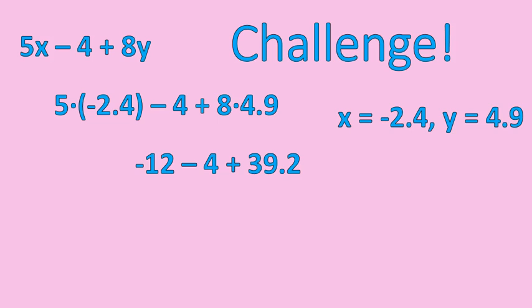So I'm going to multiply 5 times negative 2.4. That gives me negative 12. That's kind of nice that it worked out that way. And 8 times 4.9 gives me positive 39.2. So I still have a decimal, but that's not so bad.